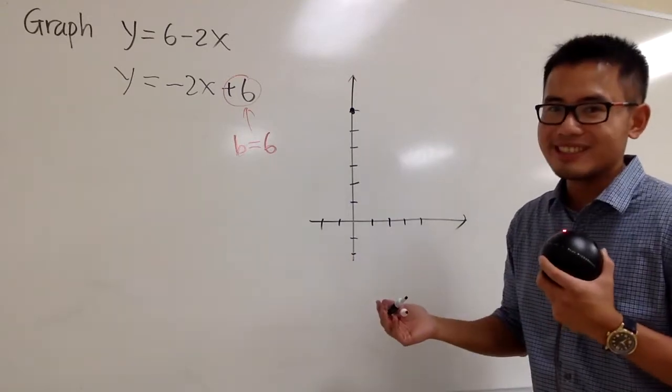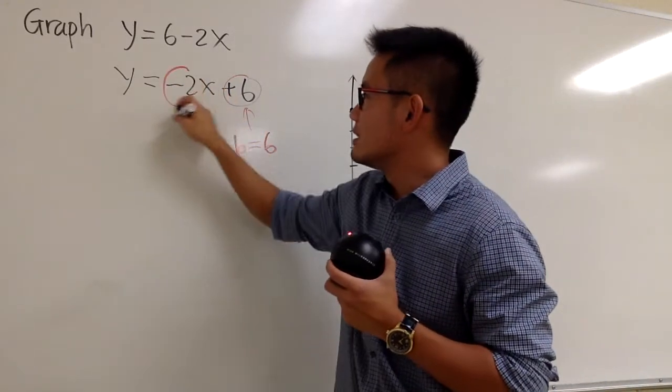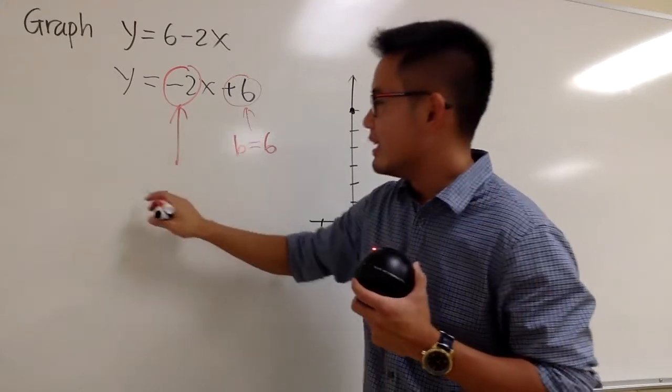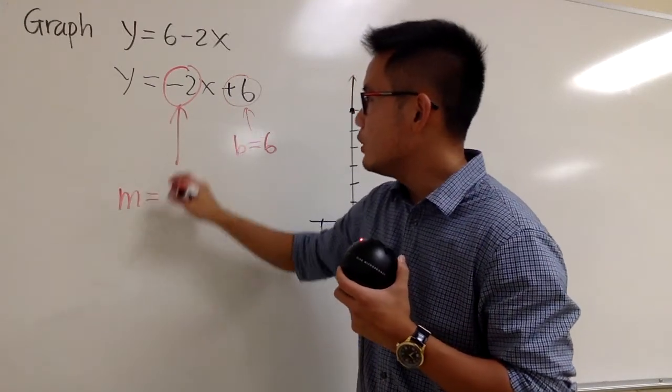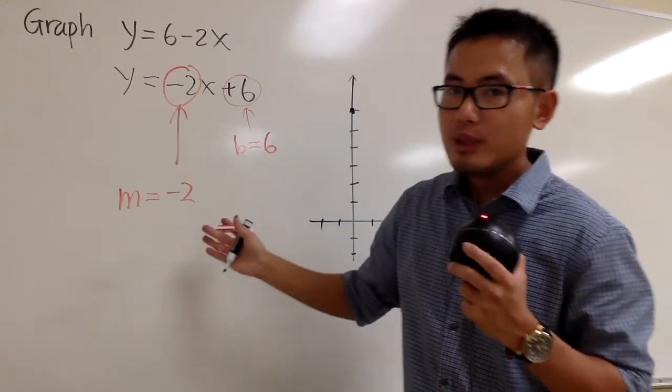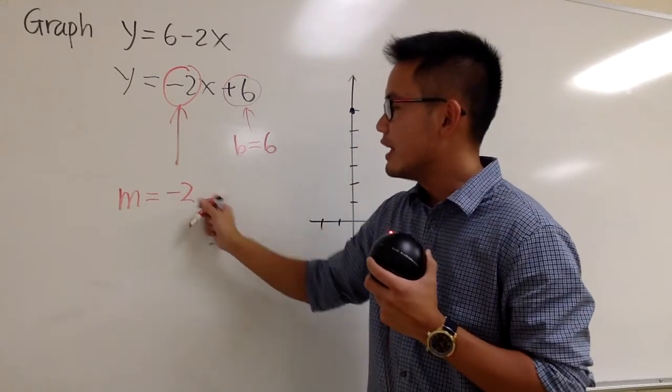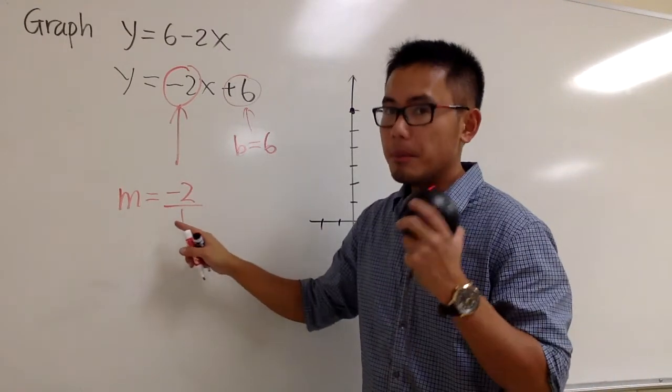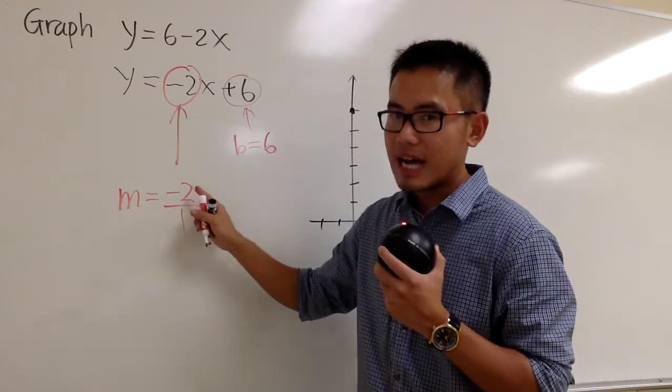And how can we get the next point? We have to utilize the slope right here. So the second step is you look at the slope. The slope in this case is m equals negative 2. But you should look at the negative 2 as negative 2 over 1. And since this is the negative slope, be sure you have the negative on the top.